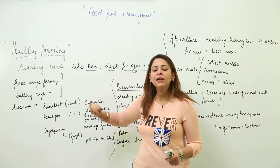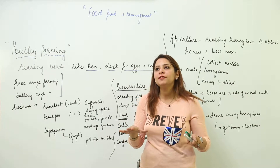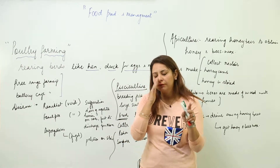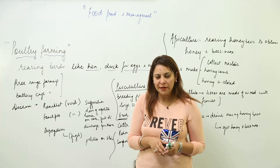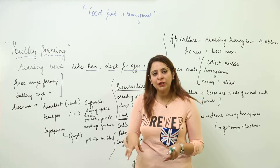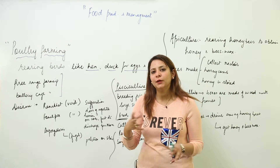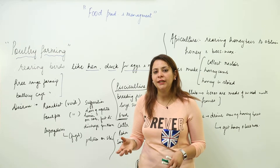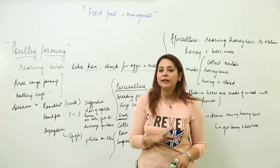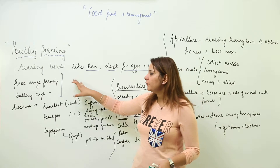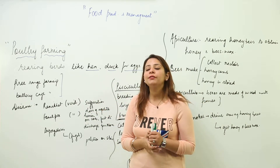In battery cage farming, we have a confined area made up of metal mesh where the chickens are kept. They are supplied with food and water and everything they need, but they don't have a large area where they can roam about. So these are the two types: free-range farming and battery cage farming.